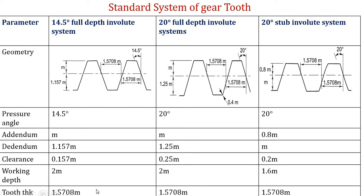Tooth thickness is measured along the circular pitch direction. The tooth thickness is 1.5708 module for all three systems — the 14.5 degree full depth, the 20 degree full depth, and the 20 degree stub systems all share the same tooth thickness value of 1.5708 module.